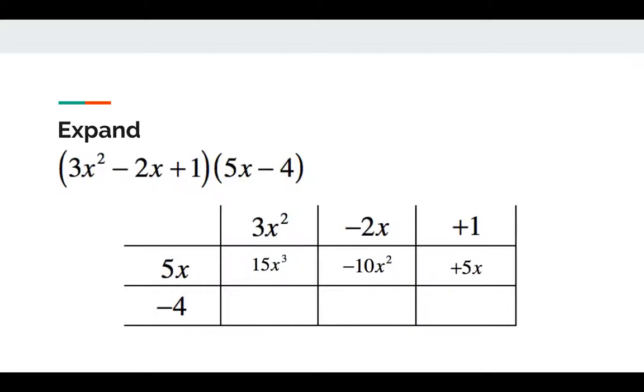-4 times 3x² gives you -12x². -4 times -2x should be positive 8x. -4 times +1 gives you -4.